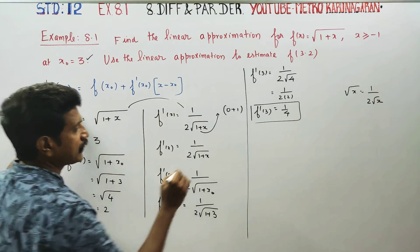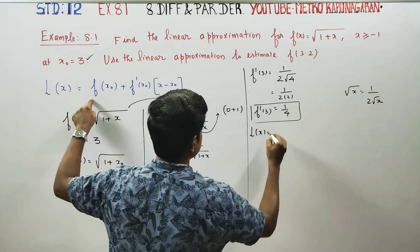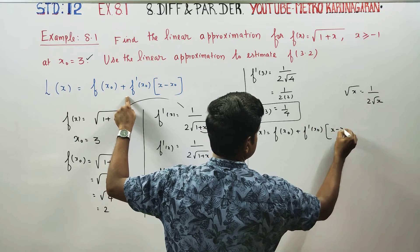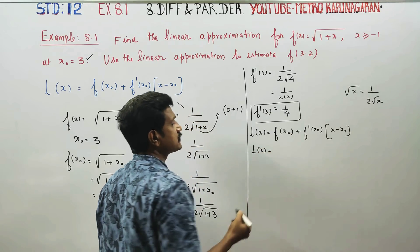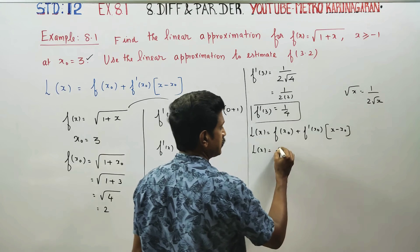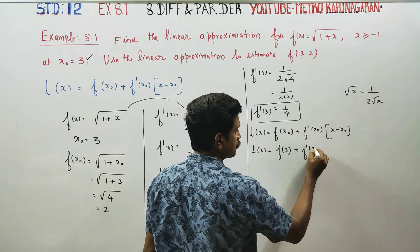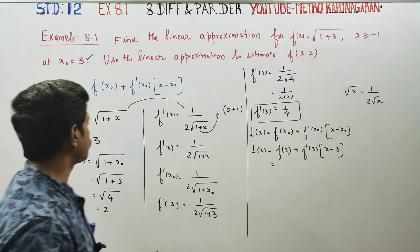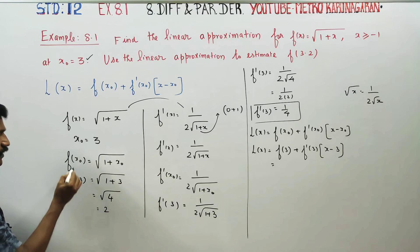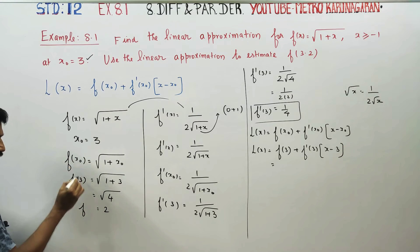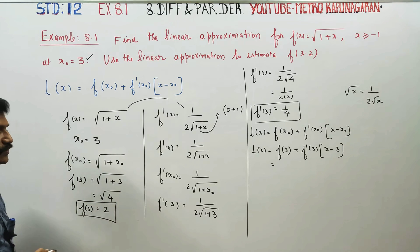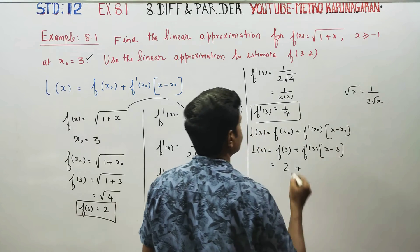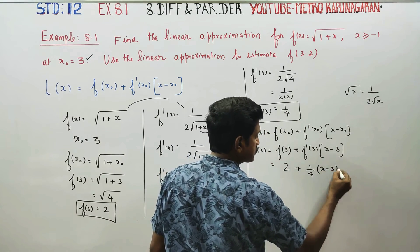The main formula: linear approximation L(x) = f(x₀) + f'(x₀) · (x − x₀). At x₀ equal to 3, substitute f(3) and f'(3).